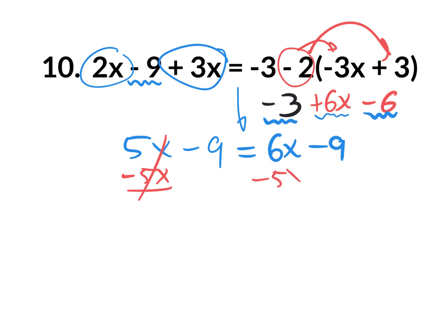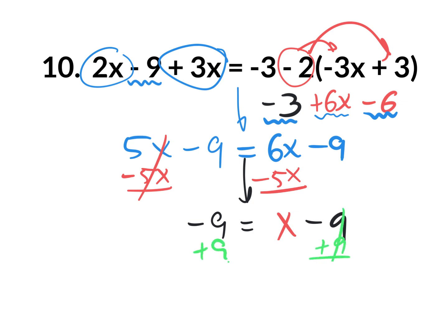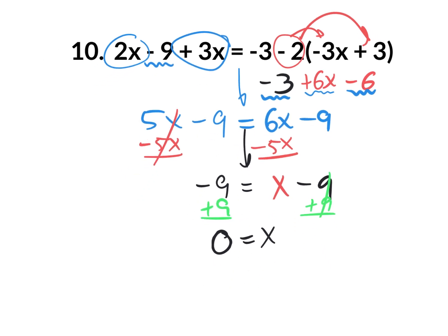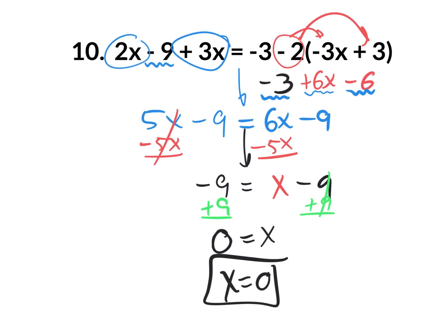When I subtract 5x from the right side, 6x take away 5x is a simple x. The equal sign keeps coming down. On the left side I have minus 9, and on the right side I have minus 9. I need to get x by itself, so add 9 to both sides. Nothing is left on the left side, which means x equals zero.